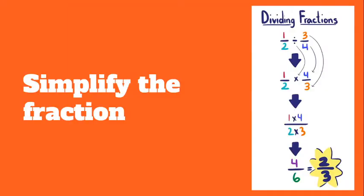Here's another example — pause the video and see if you can work out the steps to divide these two fractions. Hopefully you saw that one half divided by three fourths is the same as one half times the reciprocal, four thirds. Multiply across: four times one is four, and two times three is six. Then simplify by dividing both by two: four divided by two is two, and six divided by two is three, giving us two thirds.